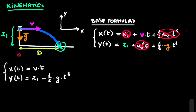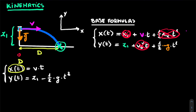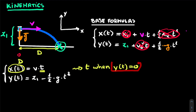Capital D is the x-distance when water hits the ground, i.e., when y = 0. We need to find the time t when y(t) = 0. Setting the y equation to zero: 0 = z1 − ½·g·t². Solving for t gives t = sqrt(2z1 / g). This is the specific time at which the water reaches the ground.